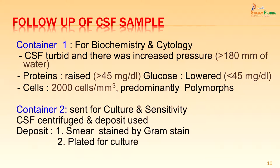The CSF after lumbar tap was collected in three containers. The first container was sent for biochemistry and cytology. The second container was sent for microscopy and culture. In the first container the CSF was seen to be turbid, with increased pressure more than 180 mmH₂O, raised proteins, lowered glucose, and cells increased more than 2000 cells per cubic millimeter which were predominantly polymorphs. Container 2 was sent for culture and sensitivity; the CSF was centrifuged and the deposit used for a smear stained by Gram stain and plated for culture.